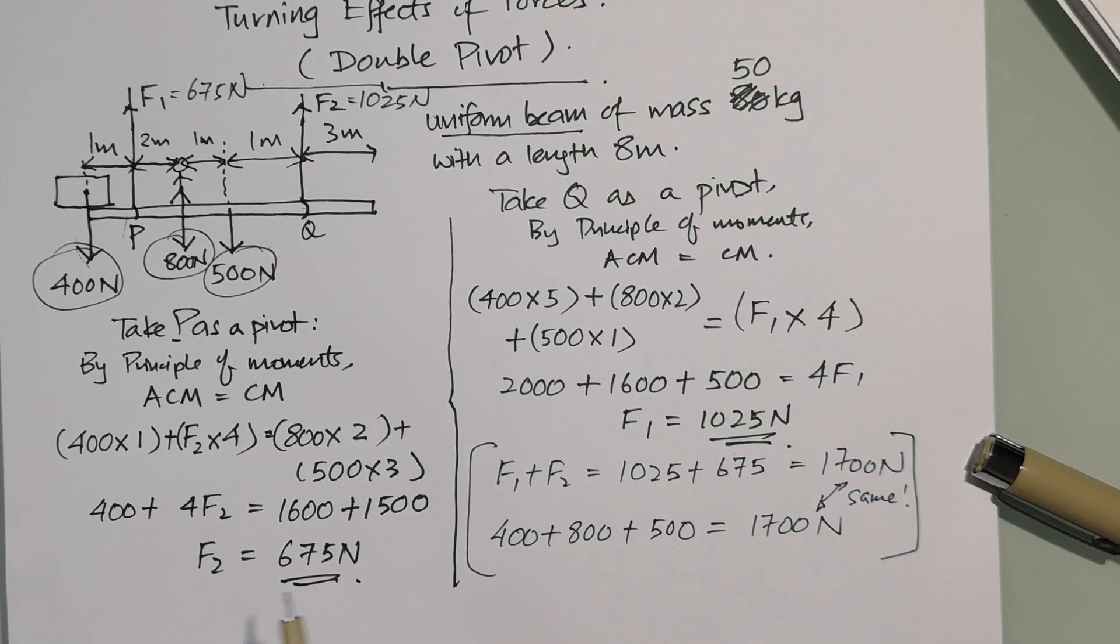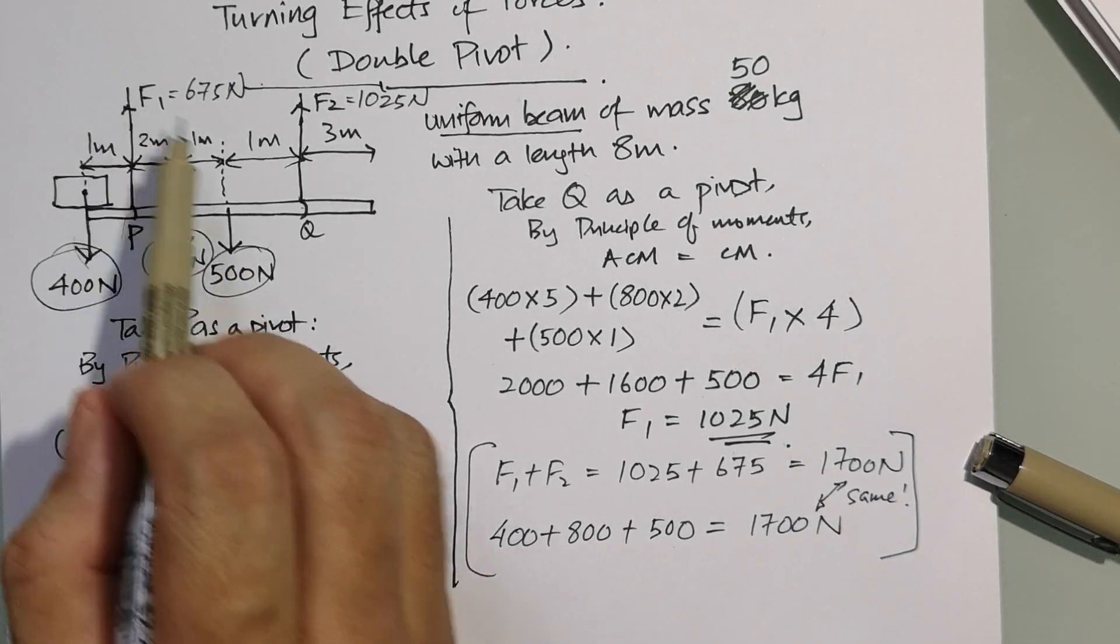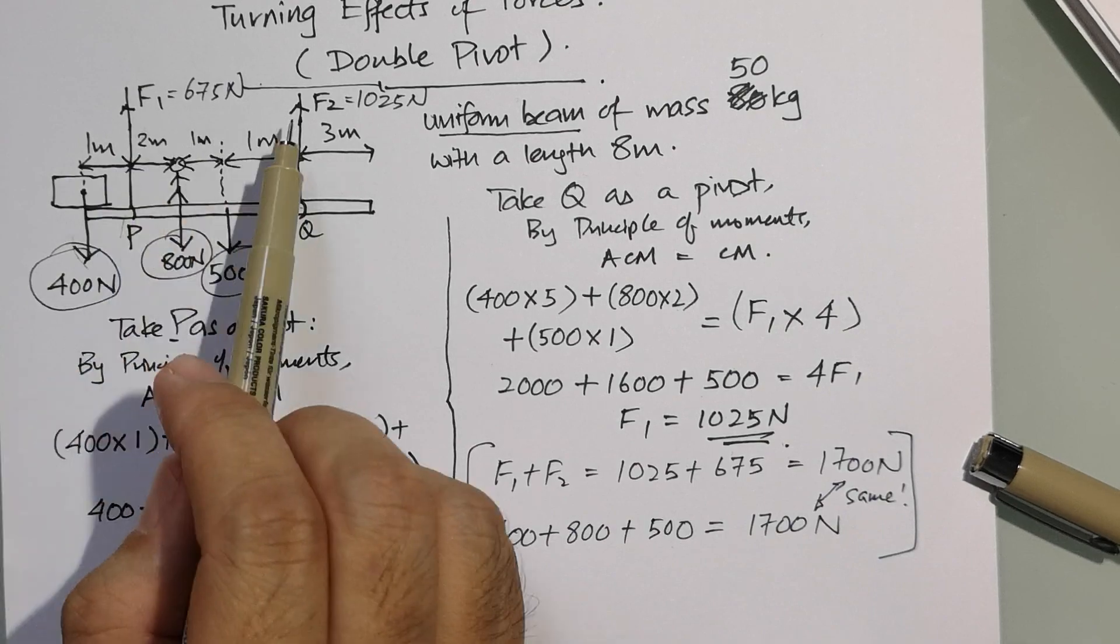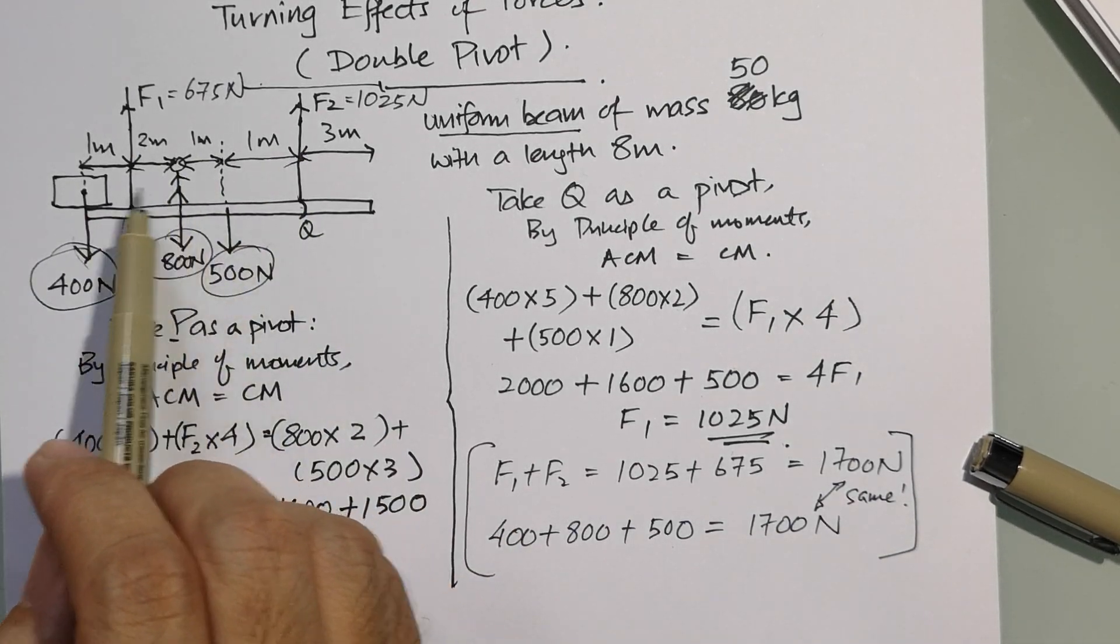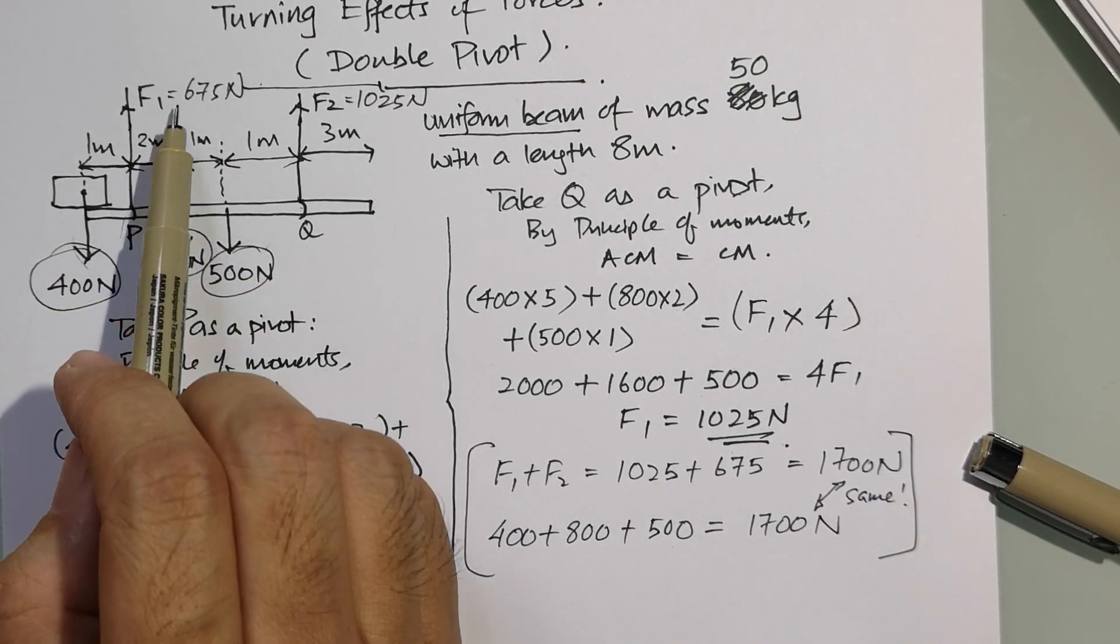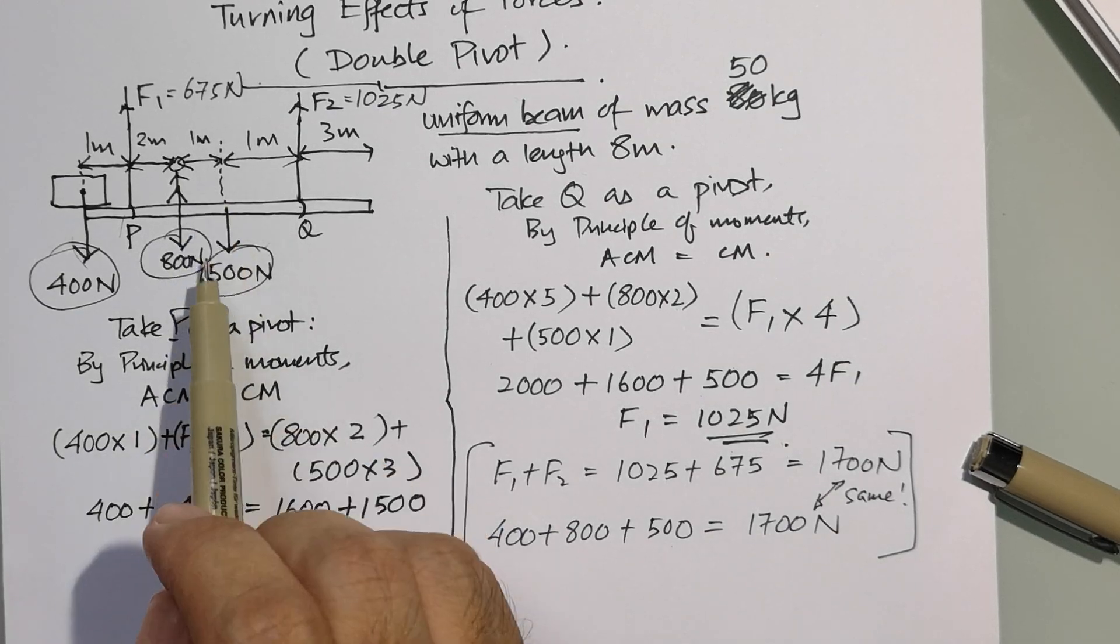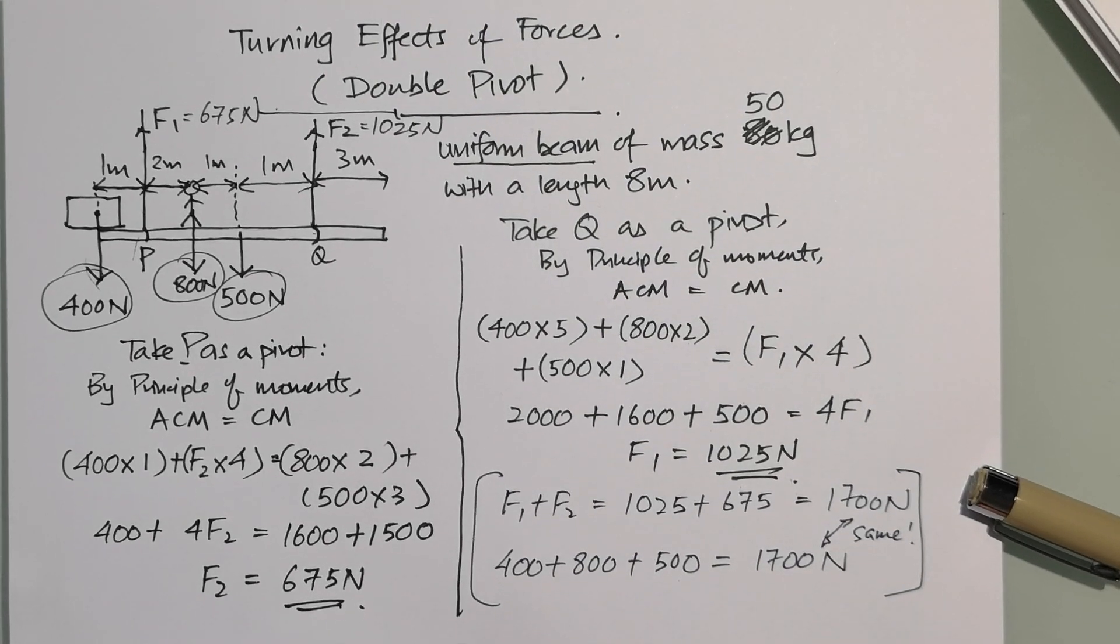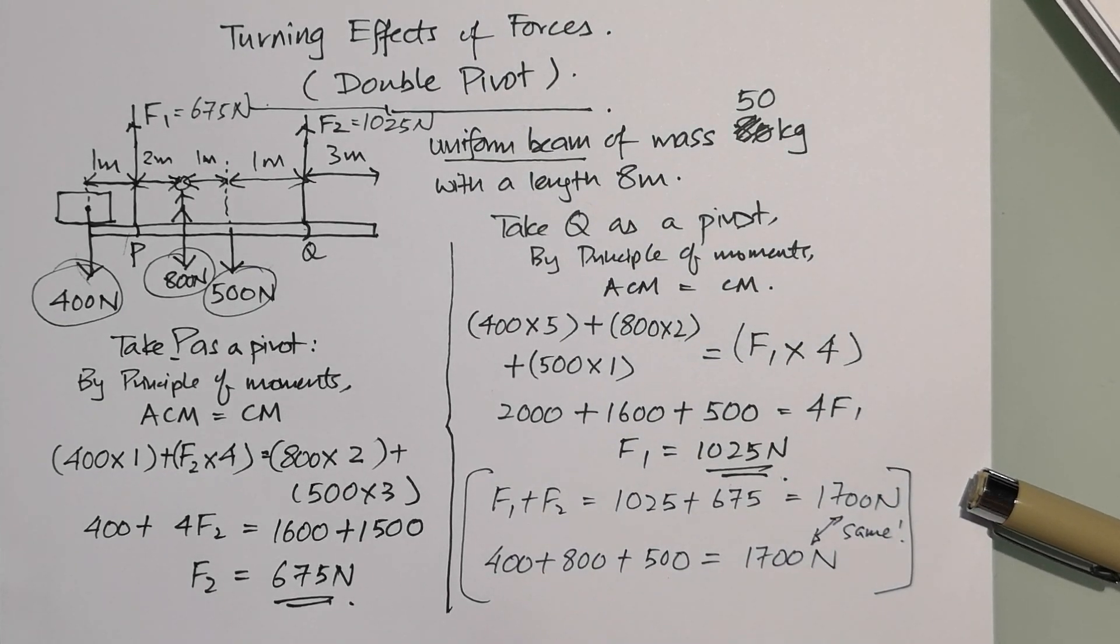This is one way to check whether you have calculated correctly or not, because it really makes sense. All the downward forces must be balanced by the upward forces, and they are usually not equal because of the positioning of these objects. This would only be equal if it's just in the center, and you can actually work that out using this method. This is the turning effects of forces double pivot question. Hope you understand.